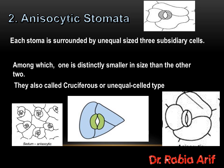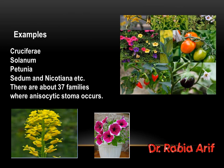For example, in the figure you can see that this type of stomata is present in the Sedum plant, which has the anisocytic type of stomata — meaning stomata with unequal-sized subsidiary cells, among which one cell is smaller than the other two. Other examples where anisocytic stomata are present include the family Cruciferae, Solanum, Petunia, Sedum, and Nicotiana. There are about 37 families where anisocytic stomata are present.